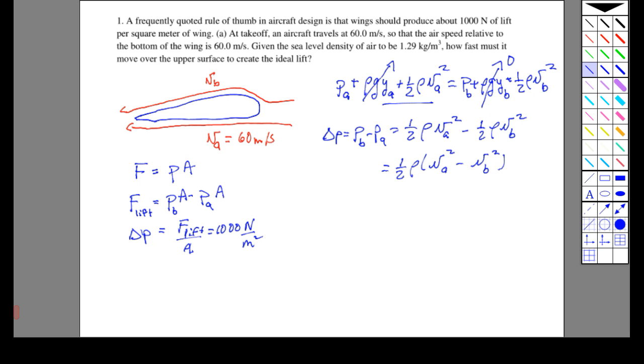Now we want to solve for V_B. We can plug in some numbers. Delta P is this thousand newtons per meter squared. We have one-half the density, which is given in the problem: 1.29 kilograms per meter cubed.